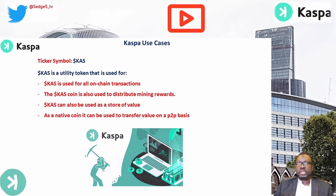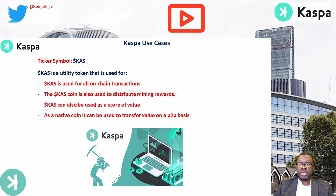Use cases for Casper (ticker symbol: KAS or CAS): the KAS coin is used for all on-chain transactions and to distribute mining rewards. KAS can also be used as a store of value, and since it is a native coin, it can be used to transfer value on a peer-to-peer basis.